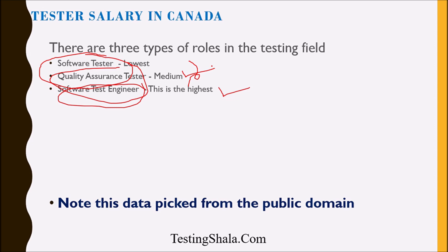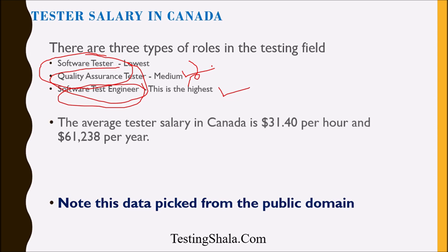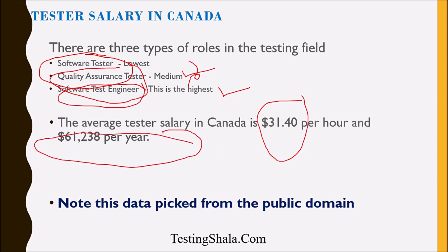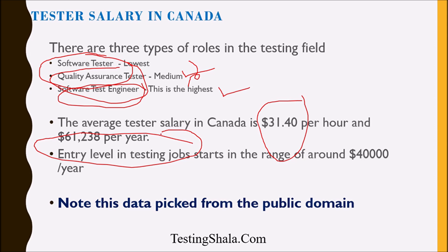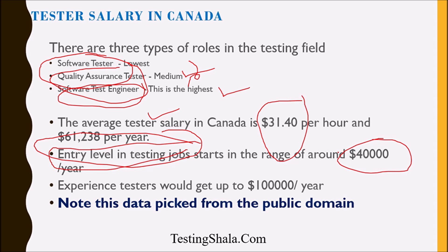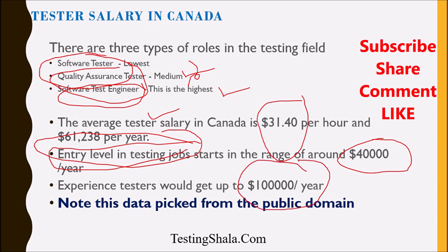The average tester's salary in Canada across all three roles is $31.40 per hour, and approximately $61,238 per year. At the entry level, salary would be around $40,000 per year, while an experienced software tester can draw up to $100,000 per year.